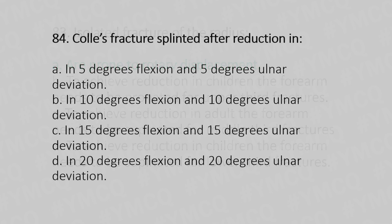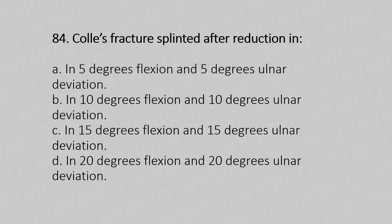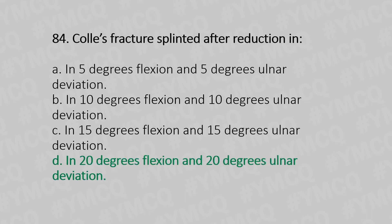Let's move to question number 84. Colles' fracture is splinted after reduction in: Option A, 5 degrees flexion and 5 degrees ulnar deviation. Option B, 10 degrees flexion and 10 degrees ulnar deviation. Option C, 15 degrees flexion and 15 degrees ulnar deviation. Option D, 20 degrees flexion and 20 degrees ulnar deviation. The answer is Option D, 20 degrees flexion and 20 degrees ulnar deviation.